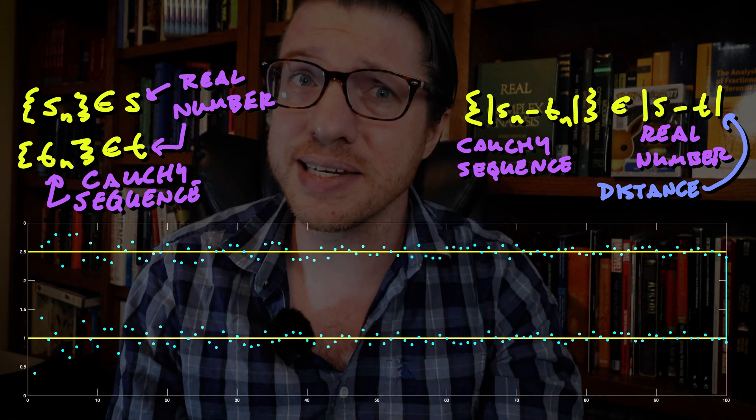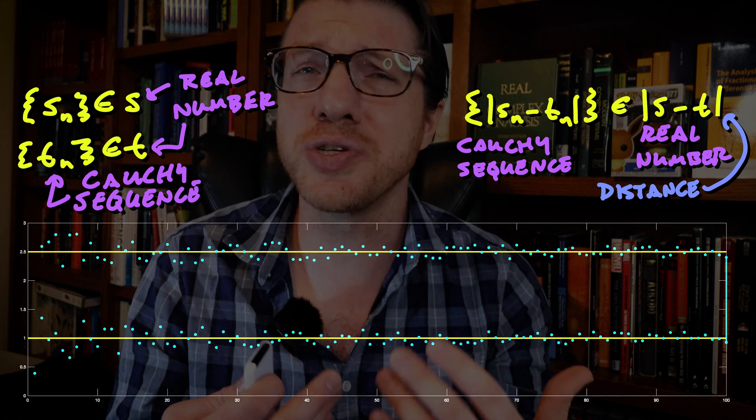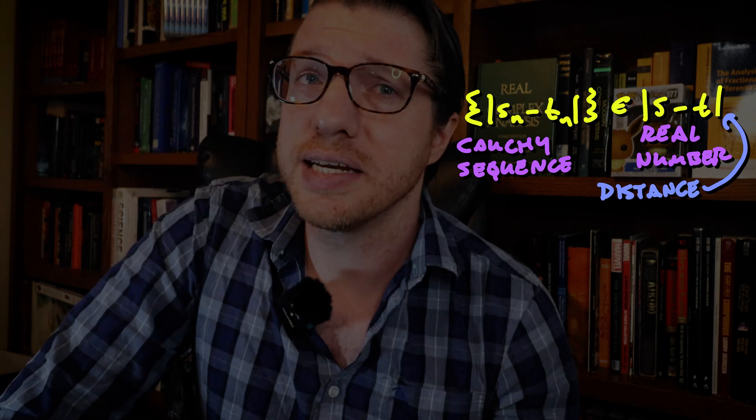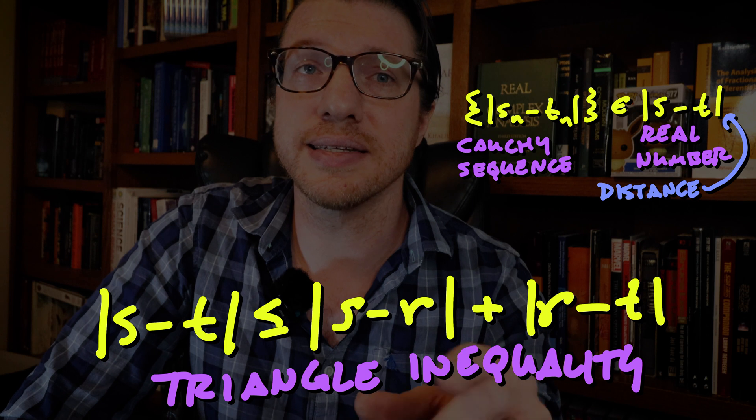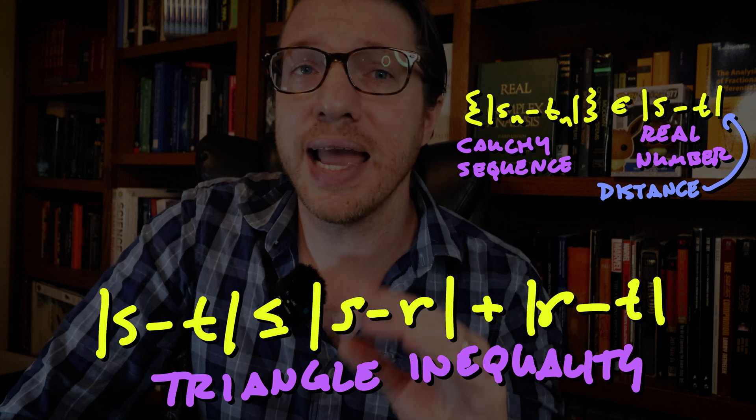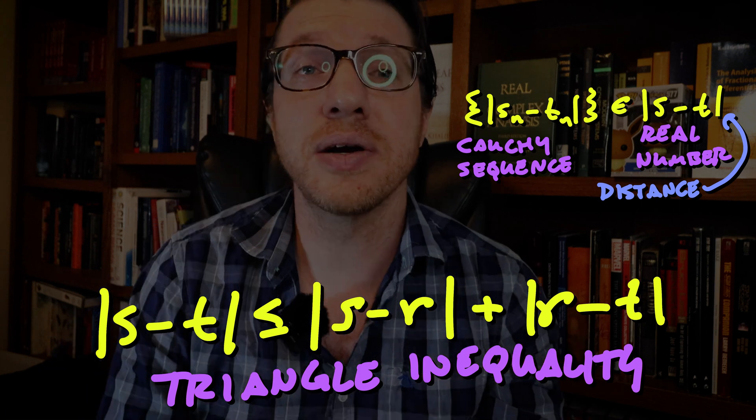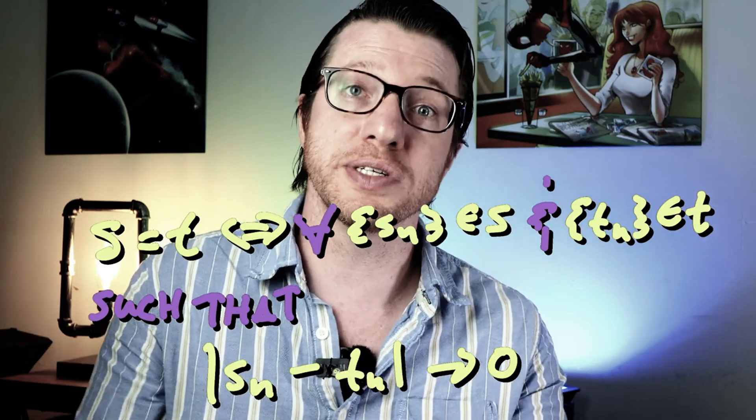And truly, once we have this least upper bound property, we are not going to need to talk about the real numbers as Cauchy sequences anymore, and thank goodness for that. This distance also satisfies the triangle inequality, just like the one for rational numbers, and later we'll see that this is something called a metric. And if the distance between two real numbers is zero, then we say that they are the same real number. This follows from our definition in the previous video, and you can find the link to that video in the description.